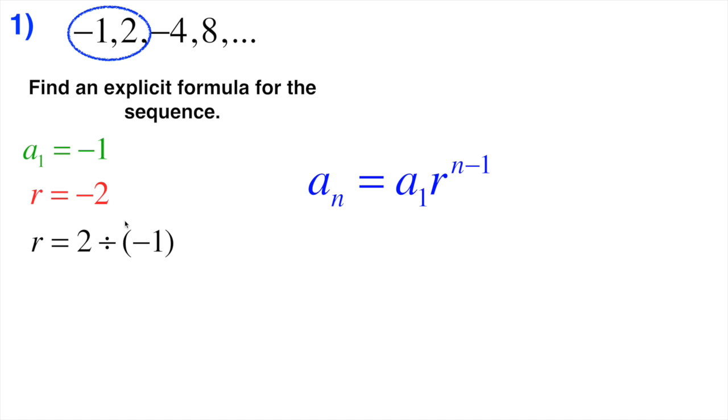Now that we have this information, let's clear out any confusion there. We know the first term is negative 1, and the ratio, the common ratio, is negative 2. Now we can just fill this in.